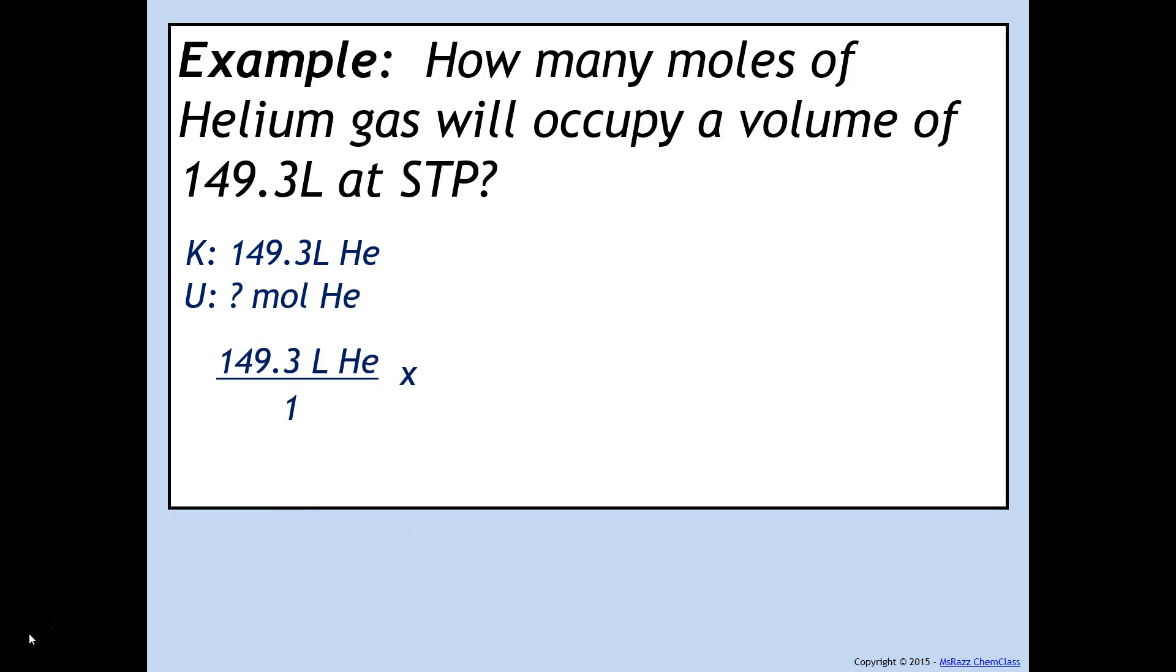and then as soon as we see that it's liters of helium, it doesn't matter what gas it is, remember, as long as it's at STP, you're going to use the conversion factor 22.4 liters. So, 22.4 liters is going to go on the bottom, and one mole of helium is going to go on top. Liters and liters divide out, and you're left with an answer of 6.665 moles of helium.